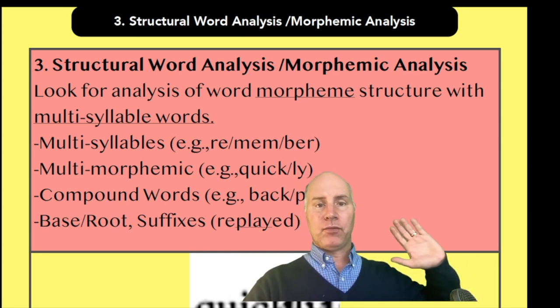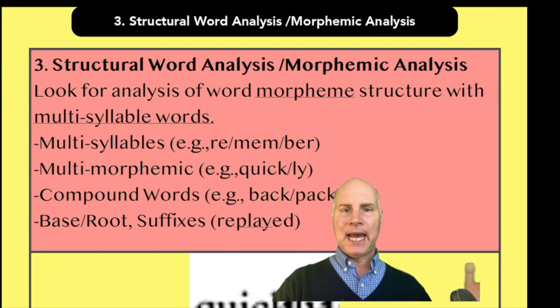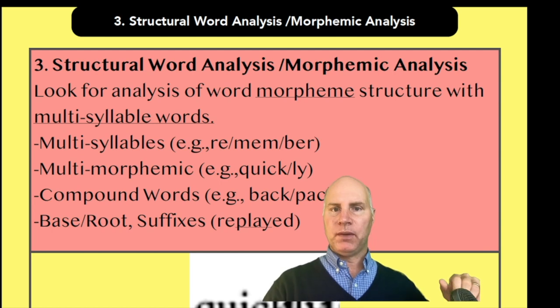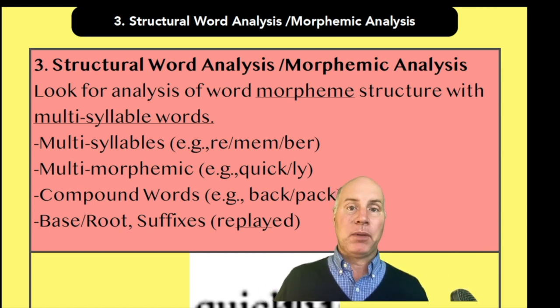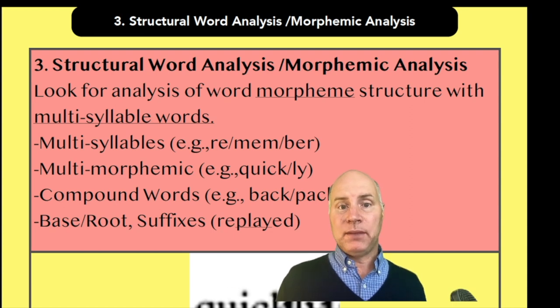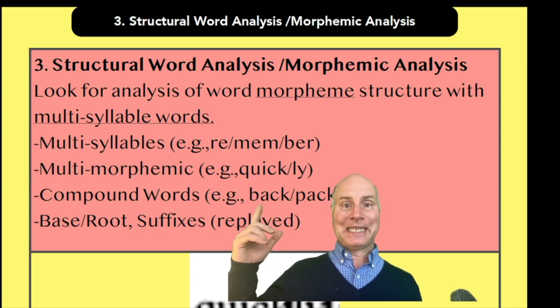So here we have remember, this is actually more of a syllable, right? Remember, but it has that re, there's a morpheme going on there. Quickly, definitely. Quickly is a good one. That's an example of a word that has lots of morphemes in it or multi-morphemic. It has a base word quick and a suffix ly.